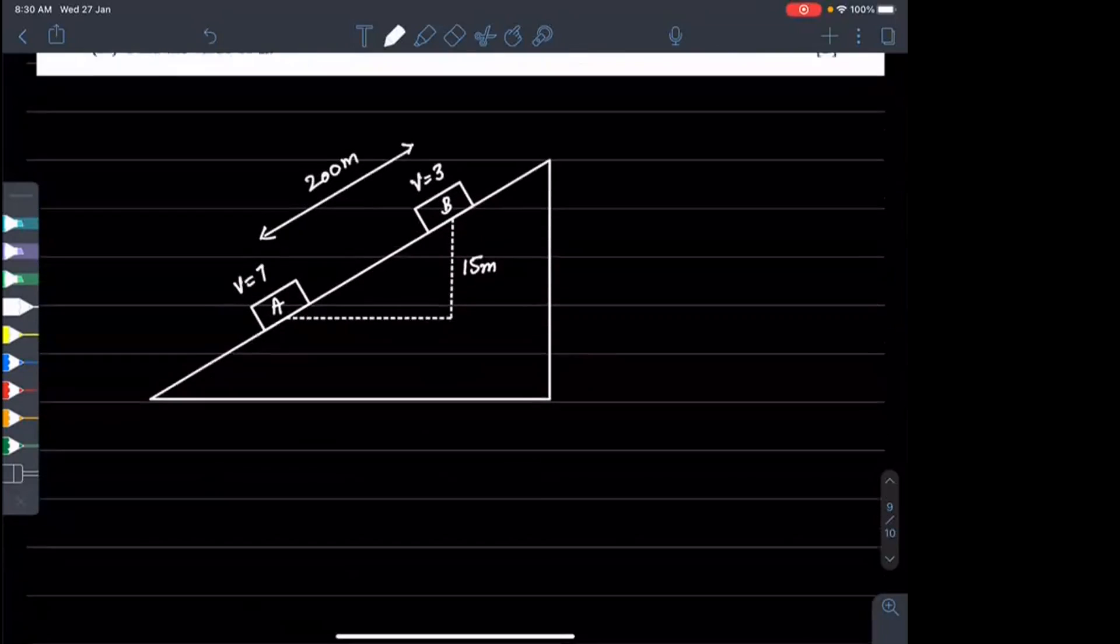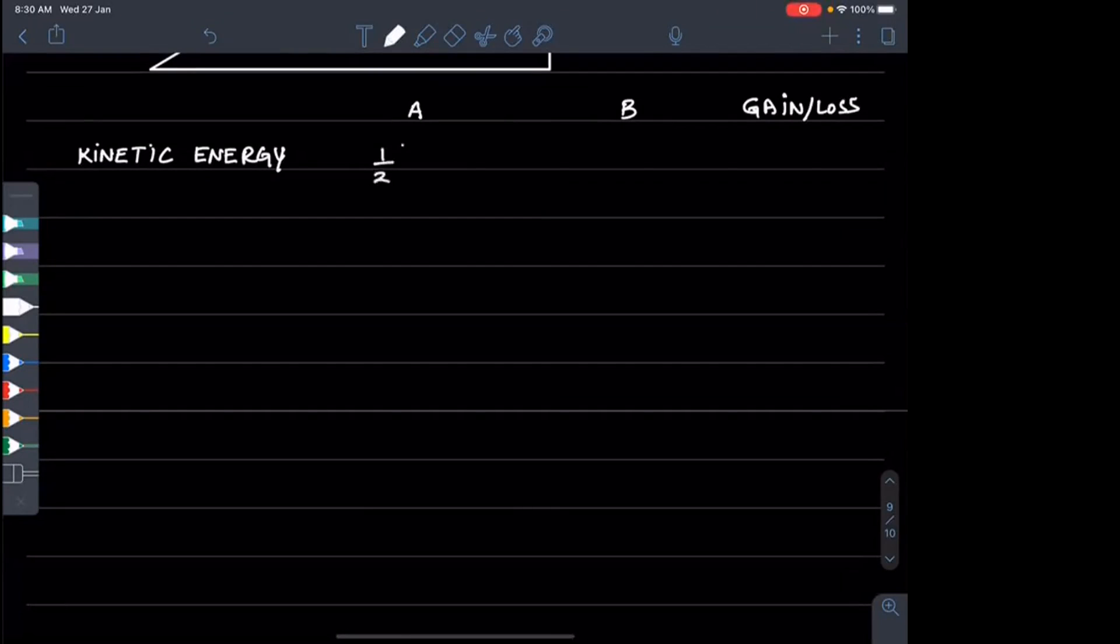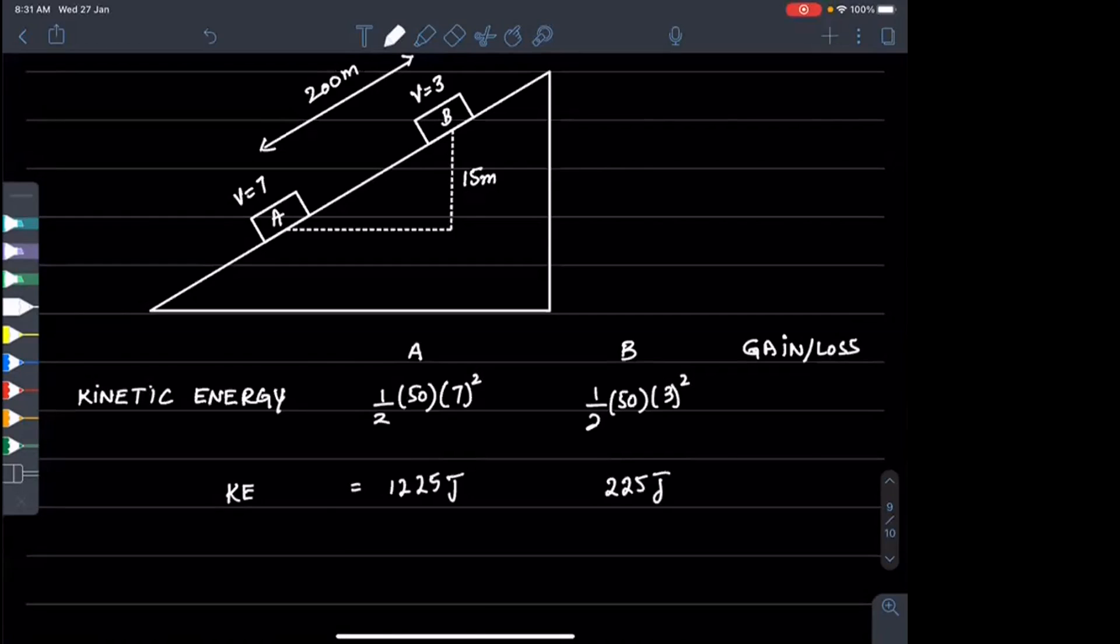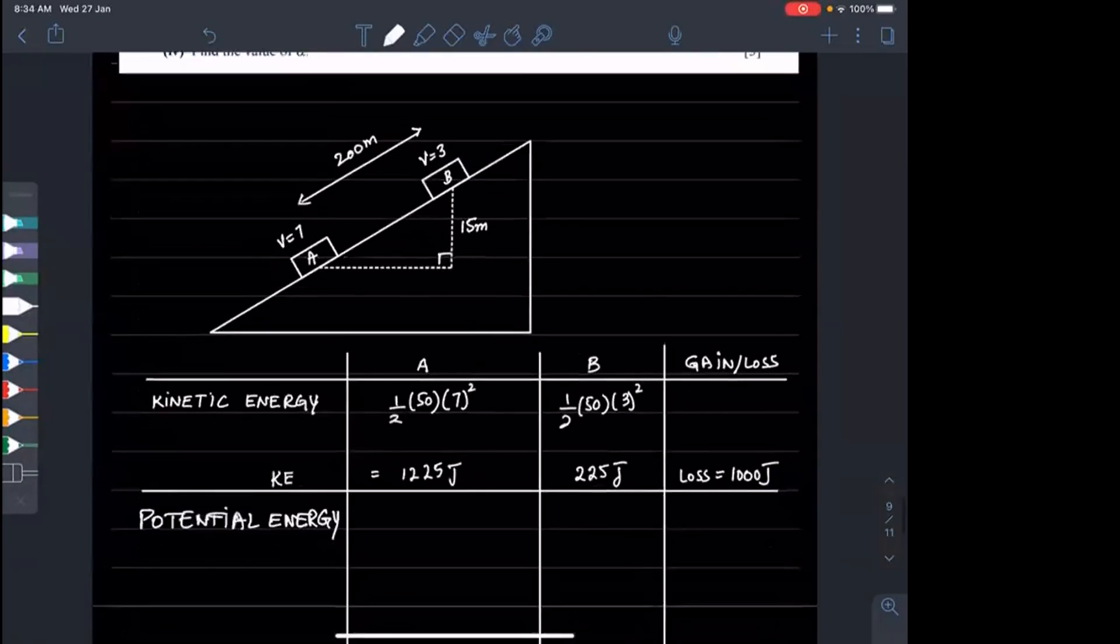Loss in kinetic energy: half m v squared at A minus half m v squared at B. Half times 50 times 7 squared minus half times 50 times 3 squared equals 1225 minus 225 equals 1000 joules. So the loss of kinetic energy is 1000 joules.